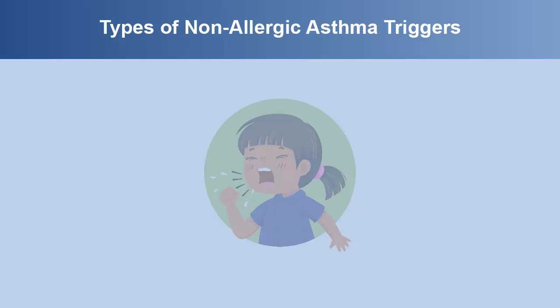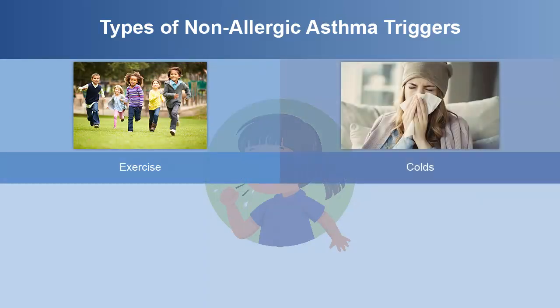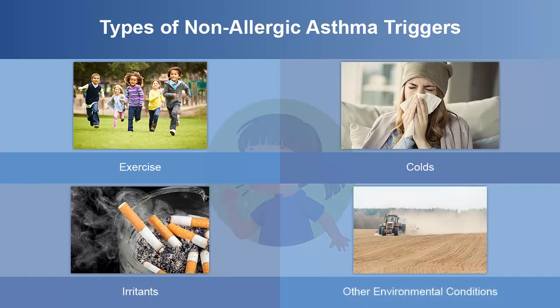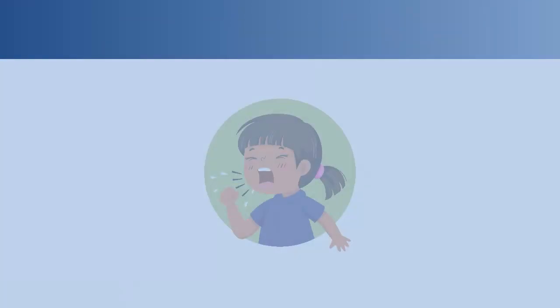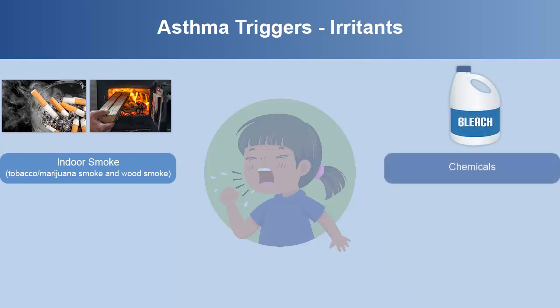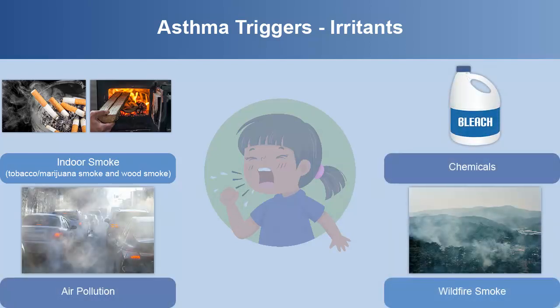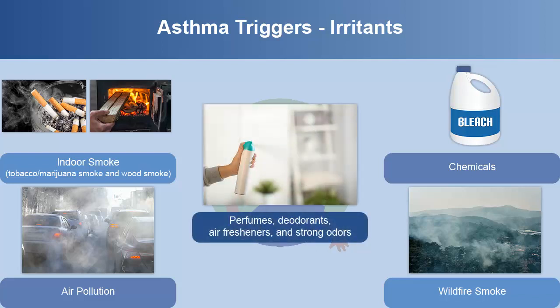Common non-allergic asthma triggers include exercise, colds, irritants, and other environmental conditions. Irritants that might trigger asthma symptoms include indoor smoke from tobacco or marijuana, wood smoke, chemicals, air pollution, wildfire smoke, and perfumes, deodorants, air fresheners, and strong odors.